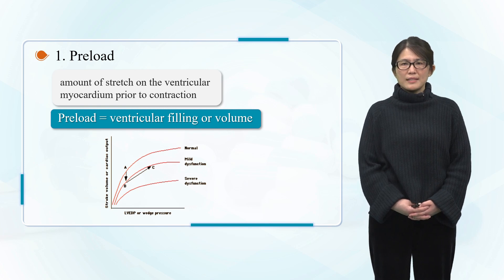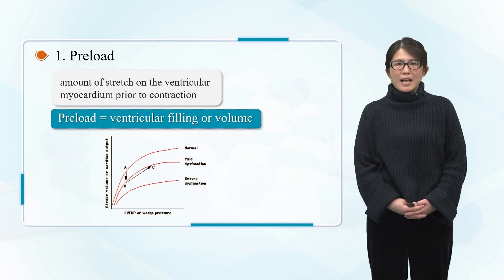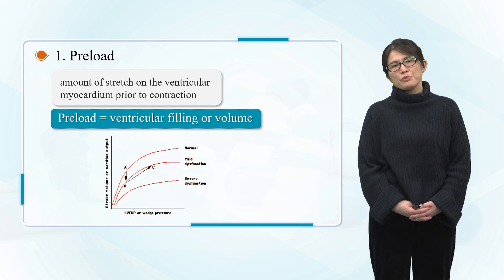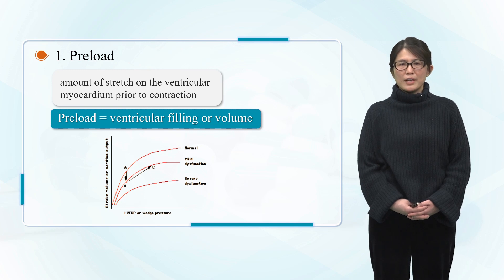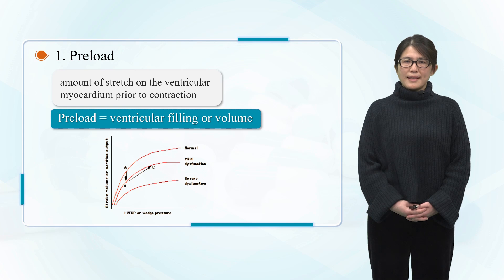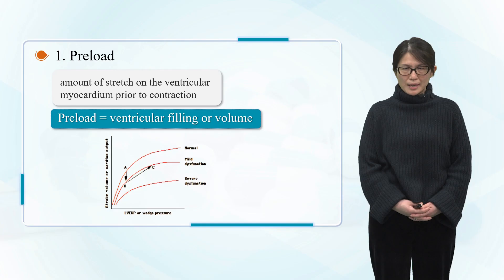The curve drawn by the corresponding stroke volume data obtained with each given ventricular end-diastolic pressure value is called the ventricular function curve, also known as the Frank-Starling curve. The ventricular function curve is divided into three sections. First, when the left ventricular end-diastolic pressure is in the range of 5 to 15 mmHg, it is the ascending branch of the curve — as ventricular end-diastolic pressure increases, ventricular stroke work also increases. Second, when the left ventricular end-diastolic pressure is in the range of 15 to 20 mmHg, the curve tends to be flat, indicating that the preload has little effect on stroke work and ventricular pumping function.